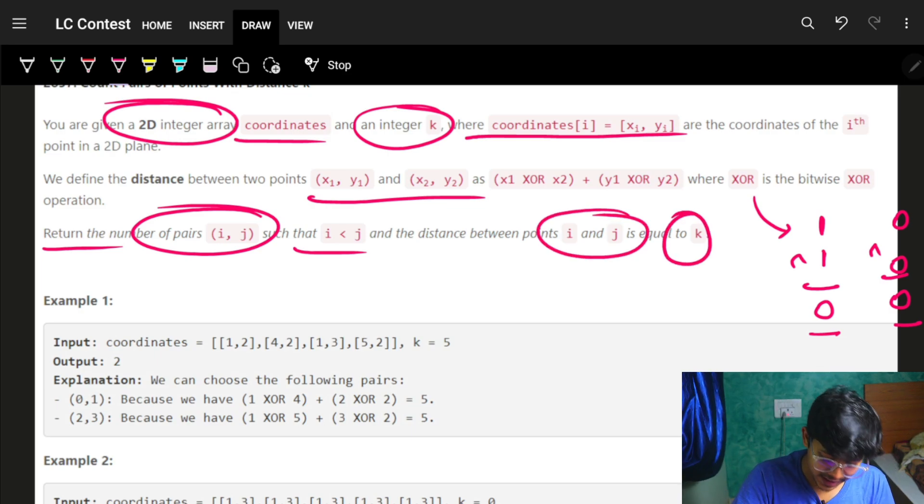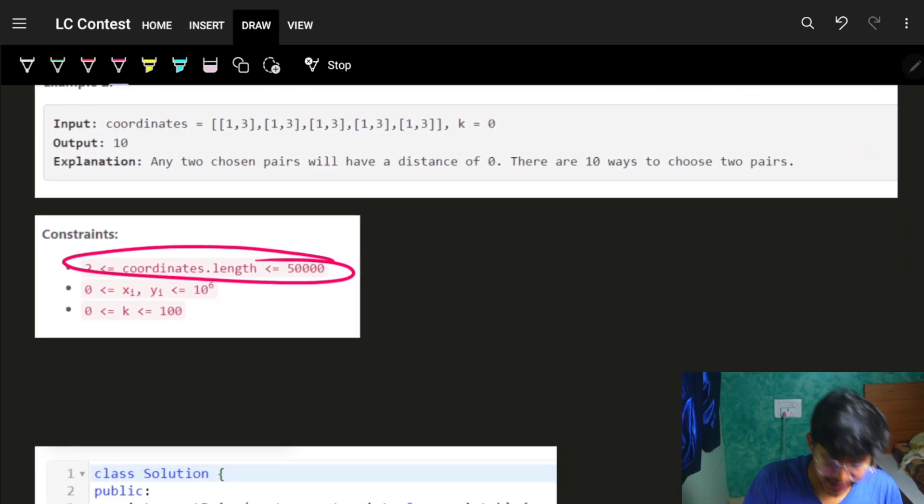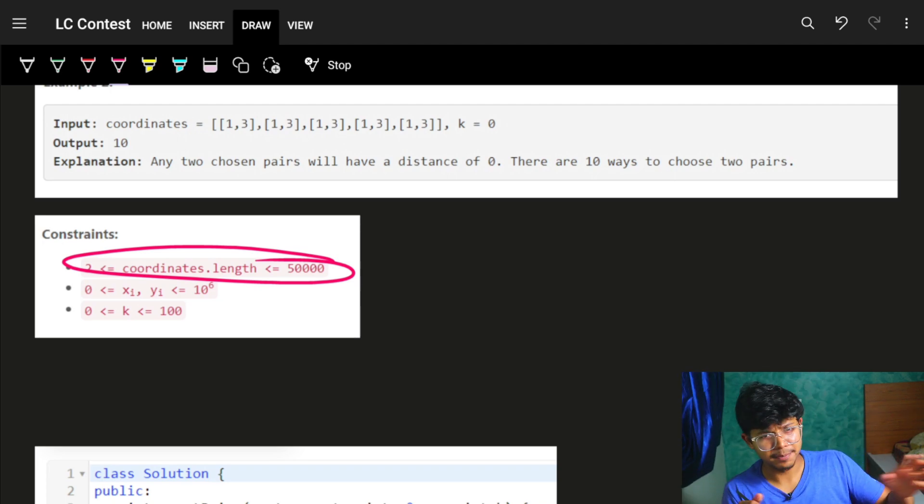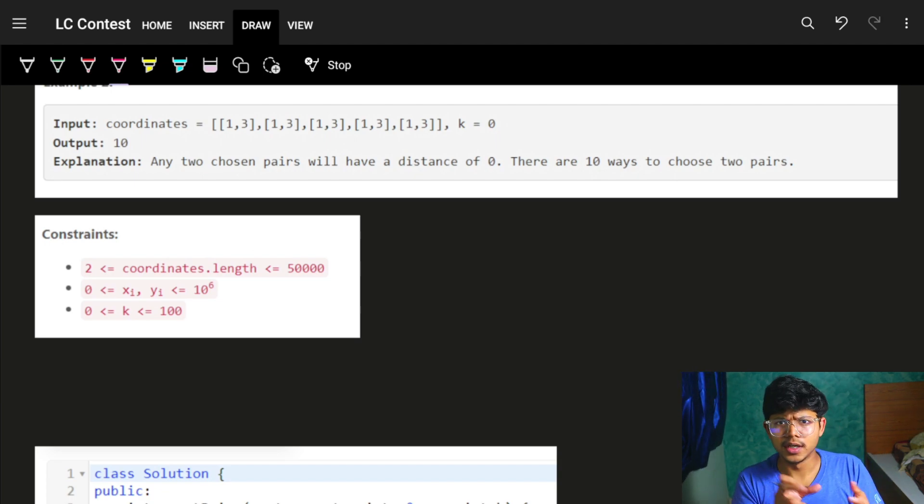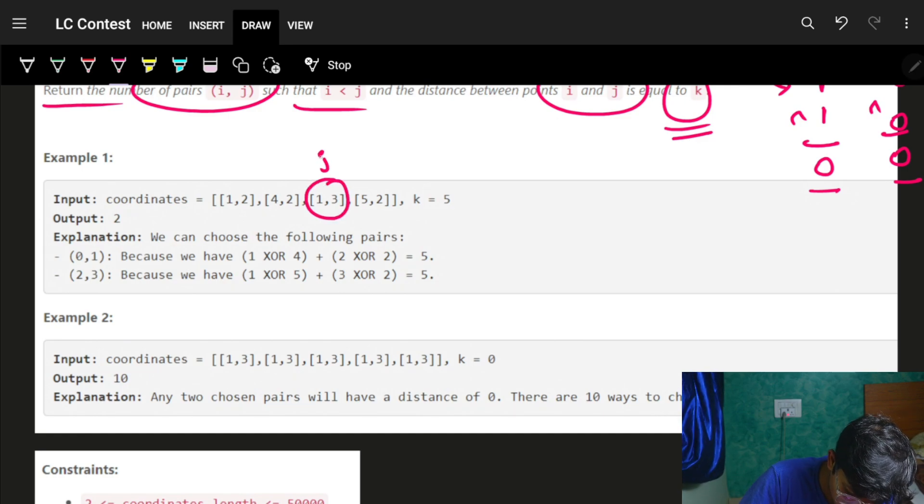Looking at the constraints, I cannot do an O(n²) algorithm to check all i, j pairs. When something like this comes up, we've previously seen that we used prefix sums to find the number of subarrays having a sum, let's say x.